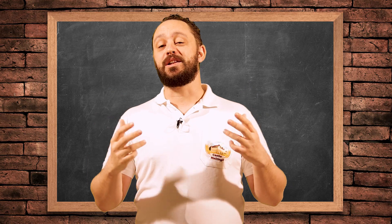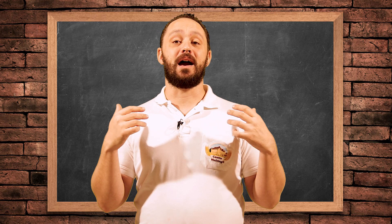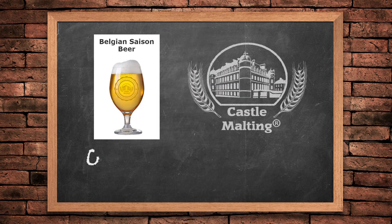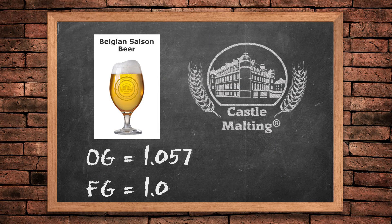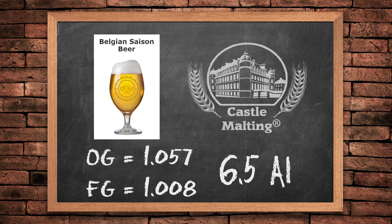Based on that we can go ahead and make a lot of calculations. For our example beer today we're going to be using Castle Malting's Belgian Saison. It has an original gravity of 1057 and a final gravity of 1008, which will give us approximately 6.5% ABV — but we'll get to that later.